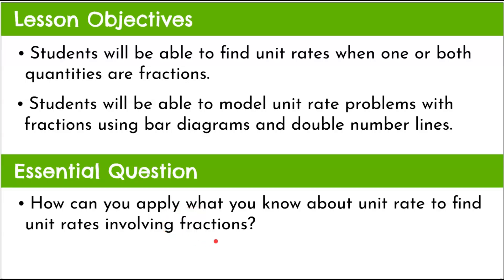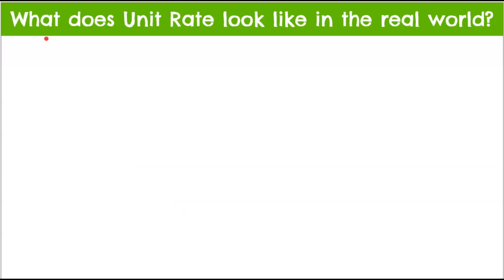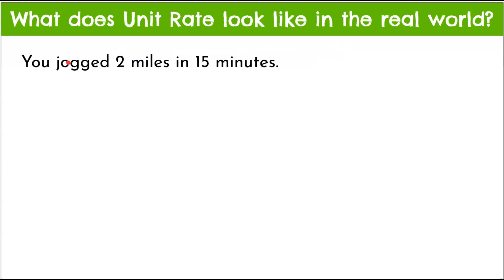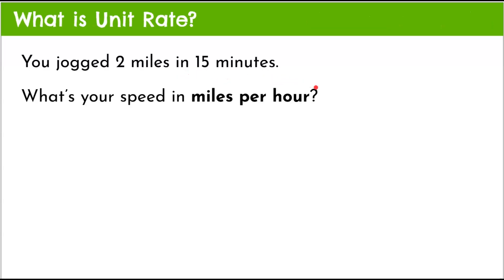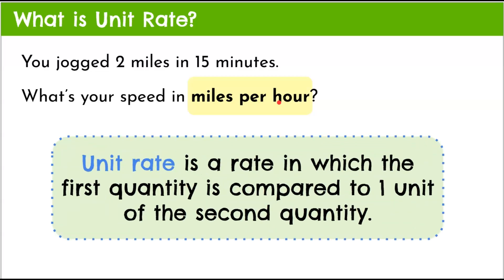First, we want to know what unit rate looks like in the real world — everything we do today is going to connect to our real world. You jogged two miles in 15 minutes. Two miles in 15 minutes is a ratio — it's a rate because it compares two quantities in two different units. We want to know what your speed is in miles per hour. By definition, miles per hour is our unit rate in the real world.